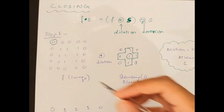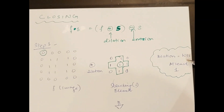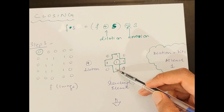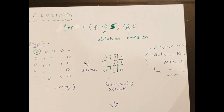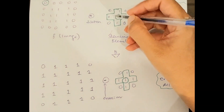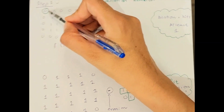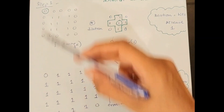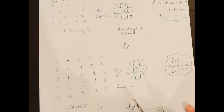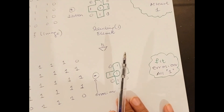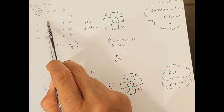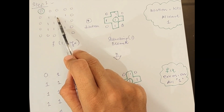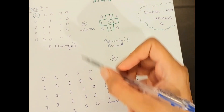Taking the same image f and the same structuring element, we now dilate it. Dilation believes in the hit principle: even if at least one element of the structuring element coincides with a one in the image, dilation gives a one. Placing the central pixel on the first background pixel yields zero since there are no adjacent ones. The next zero has a one on its bottom side, so it converts to one. Similarly adjacent zeros also convert to ones.